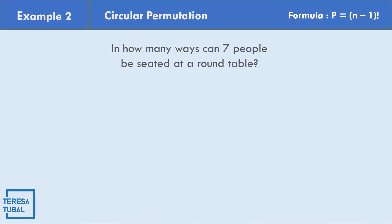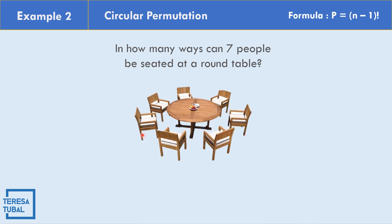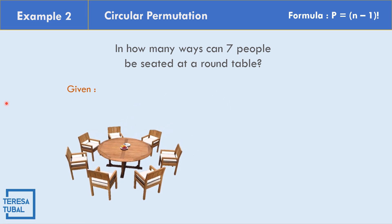In example number 2, in how many ways can 7 people be seated at a round table? As you can see in the illustration, we have 7 chairs for 7 people at a round table. The given is n equals 7. The formula for circular permutations is P equals (n minus 1) factorial.